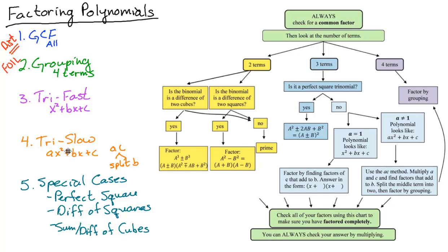If it isn't equal to one, that means it has a leading coefficient that is not one. You're going to use the AC method. You multiply A and C, then you find factors to split B. So you split the middle term into two, and then you have four terms. This arrow will lead you right back up here to factoring by grouping.